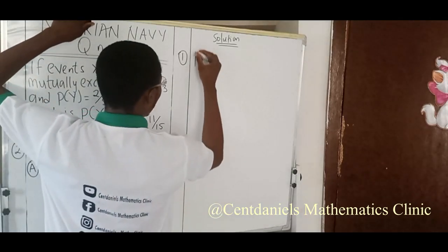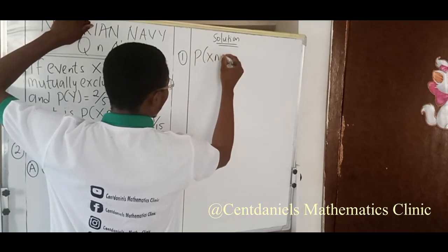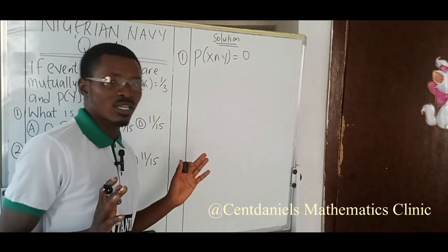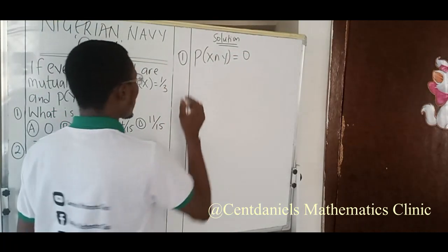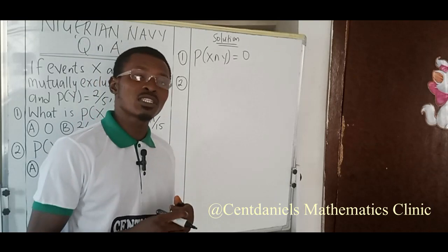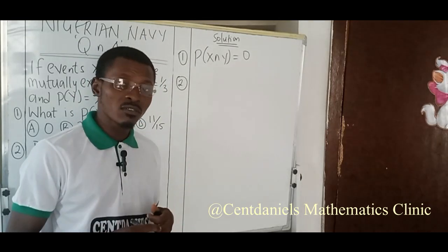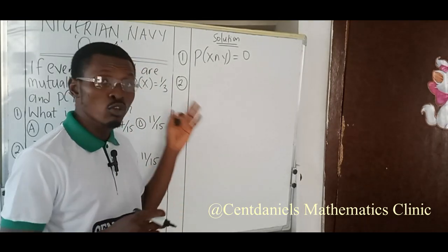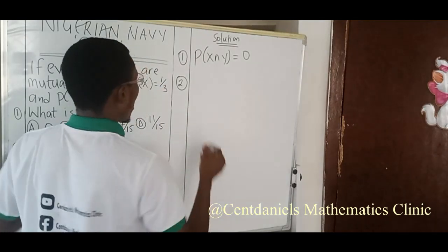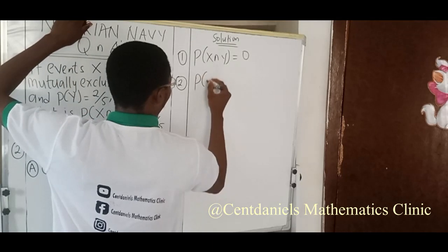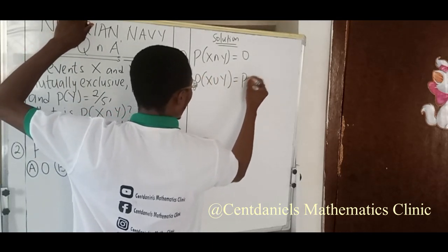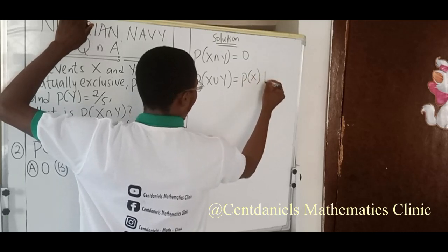Number two, also if two probabilities are said to be mutually exclusive, it means that their union, the probability of their union, is the sum of their individual probabilities. I mean P of X union Y will be equals to P of X plus P of Y.